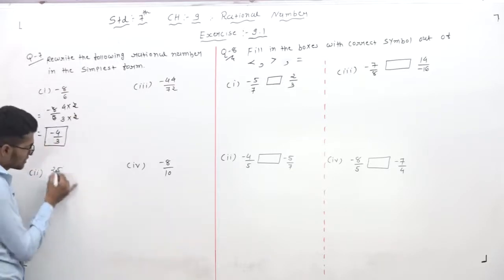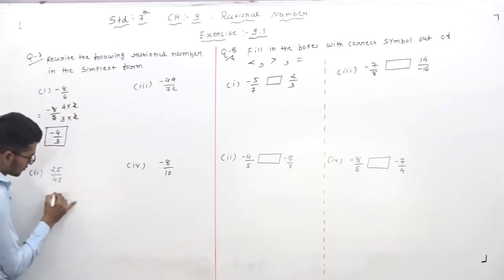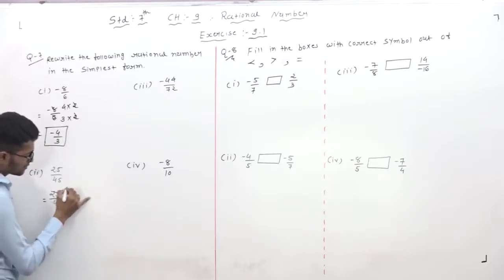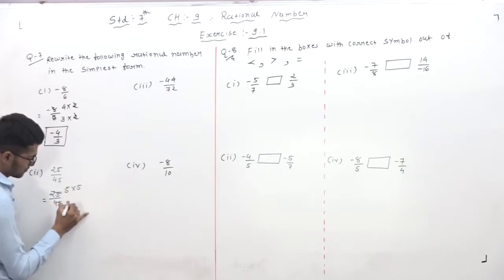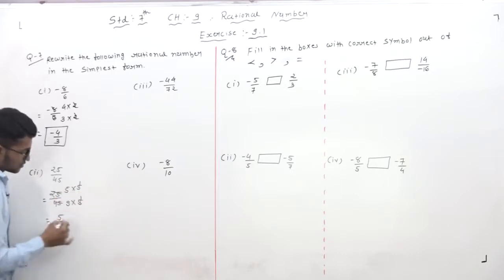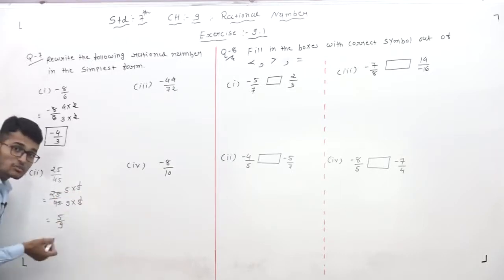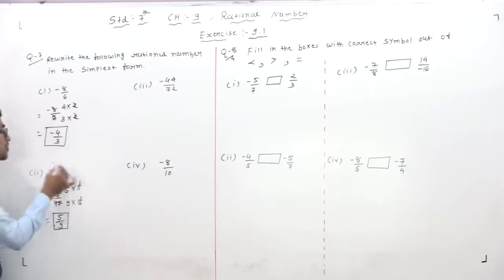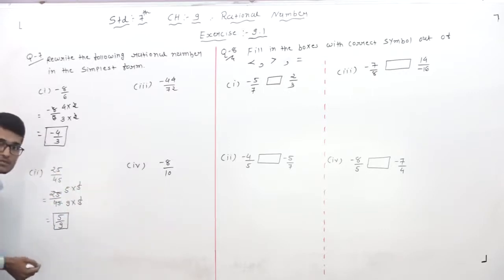Next: 25 by 45. Write down 25 by 45. Here 25 is 5 fives, and 45 is 9 fives. So we cut by 5, and the remaining is 5 by 9. No further cutting is possible, so 5 by 9 is the simplest form of 25 by 45.